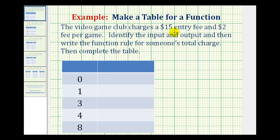The Video Game Club charges a $15 entry fee and a $2 fee per game. Identify the input and output and then write the function rule for someone's total charge. Then complete the table.